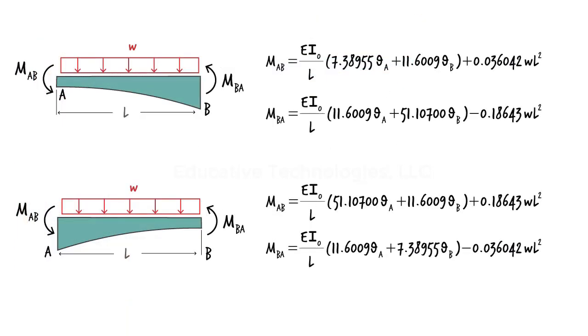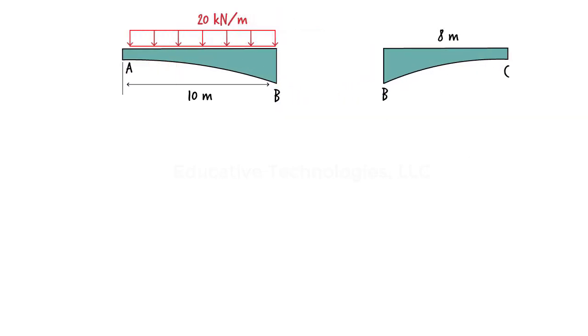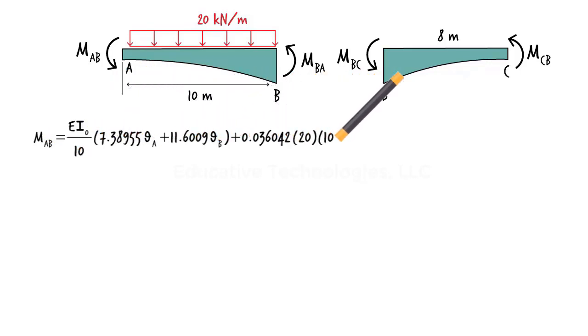Having obtained the revised slope-deflection equations, we are now ready to analyze the beam. For segment AB, where the length is 10 meters and the intensity of the distributed load is 20 kN per meter, we can write the slope-deflection equations like this.